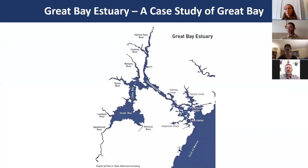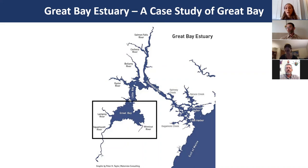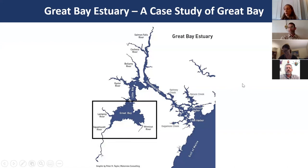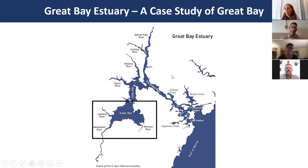While the whole Great Bay estuarine system is nitrogen impaired, my work focused specifically on Great Bay—the portion south of Little Bay near Adams Point. As a whole, Great Bay estuary is a well-mixed system with no horizontal or vertical stratification. Total freshwater input is about 2% of the tidal prism, and on average a freshwater parcel resides within the estuary for 5 to 20 days.